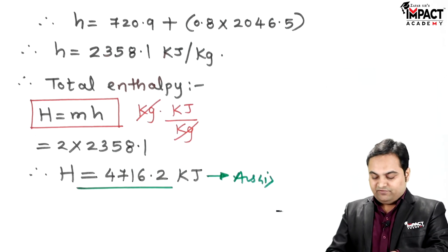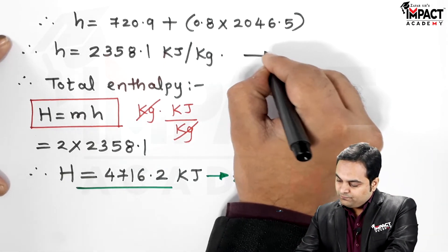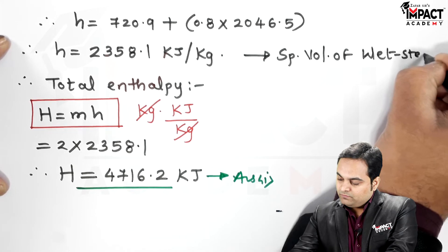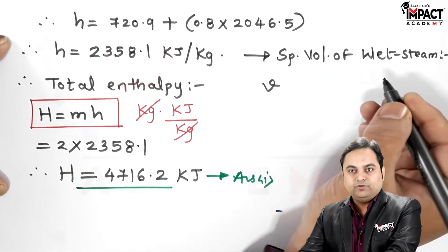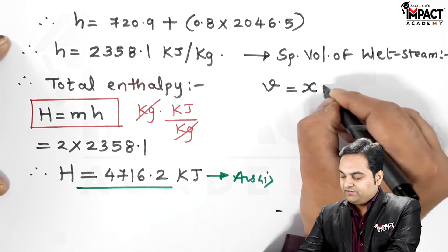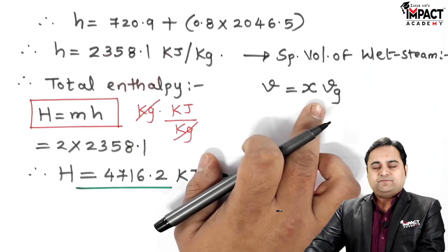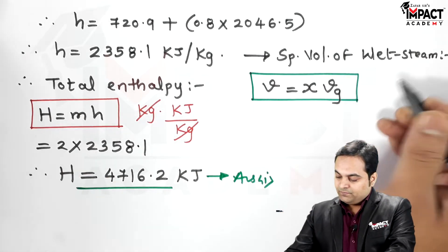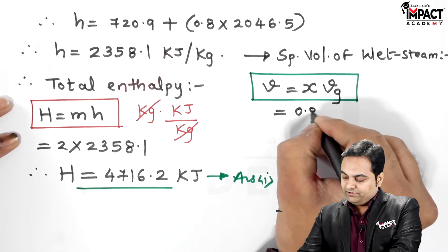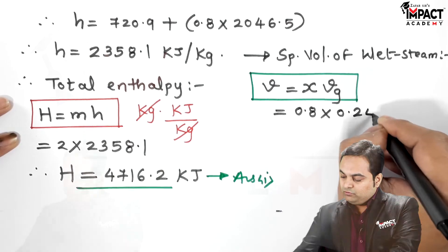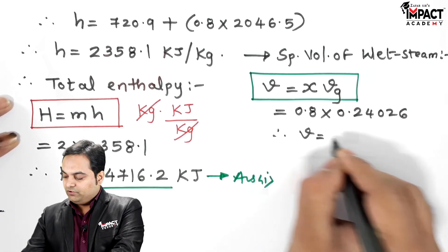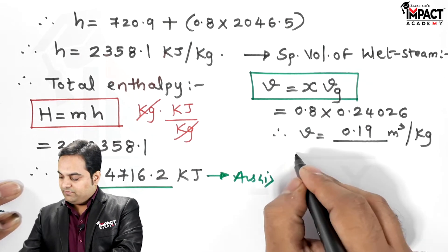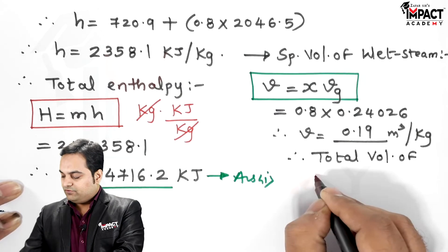Next, to find the total volume, I first calculate the specific volume of wet steam. The formula for specific volume of wet steam is: v = x × VG, where x is the dryness fraction and VG is the specific volume of dry saturated steam. Substituting: v = 0.8 × 0.24026, which gives a specific volume of 0.19 m³/kg.